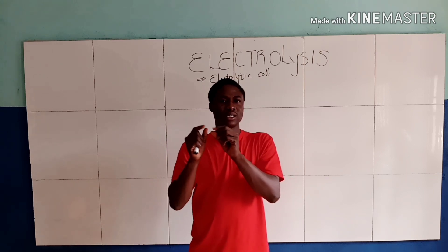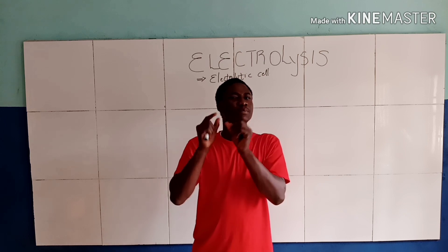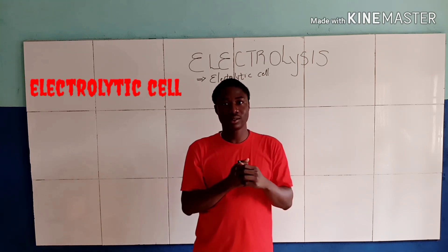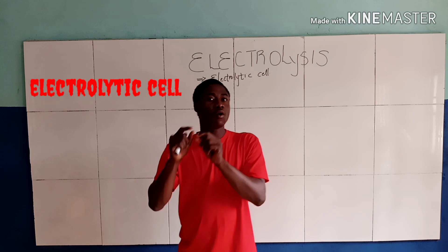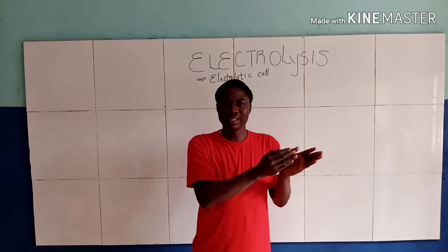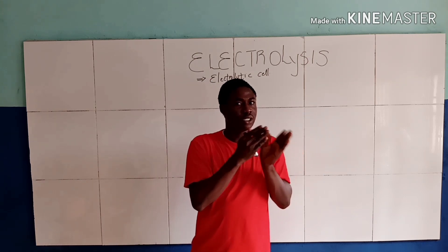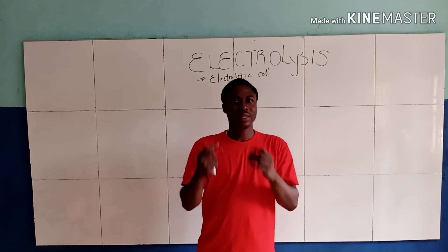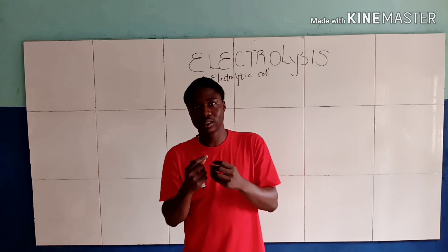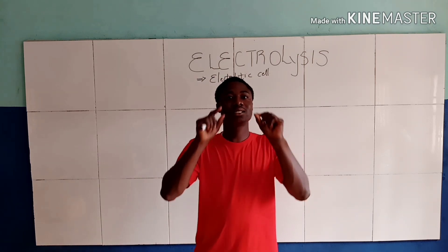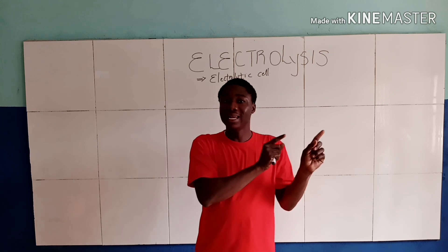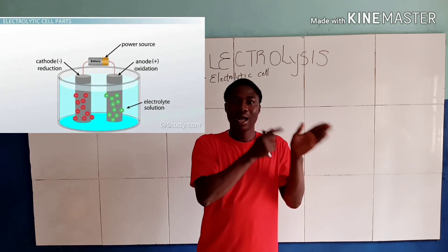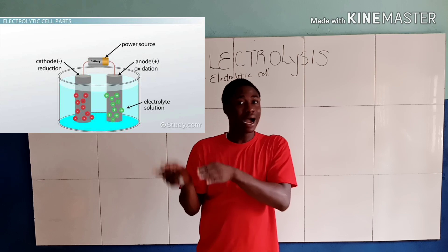Electrolysis occurs in a special vessel called the electrolytic cell, which involves the conversion of electrical energy to chemical energy. Talking about this electrolytic cell, it contains an electrode.